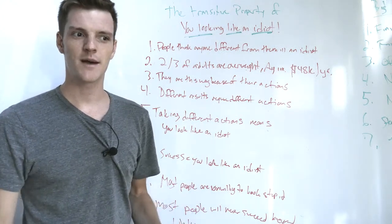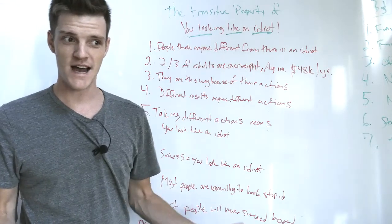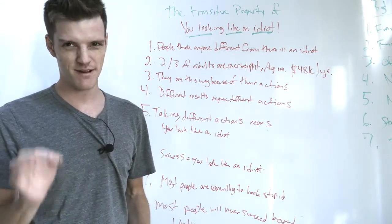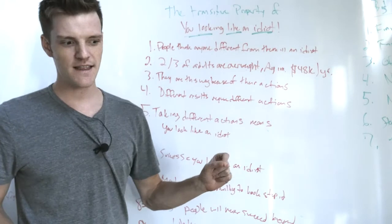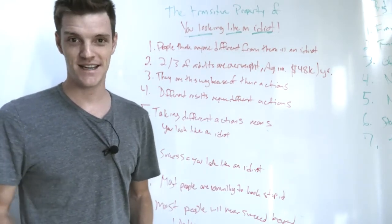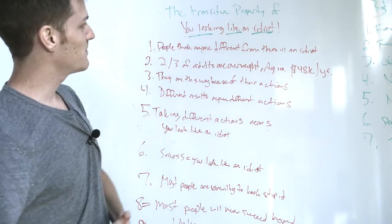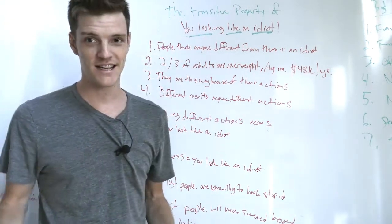A couple years ago, I was reading a book by the author of the Dilbert comic strip, Scott Adams, and he said something that I found very interesting. He said that your willingness to be humiliated was one of the biggest indicators of success. Today, we're going to talk about the transitive property of you looking like an idiot.